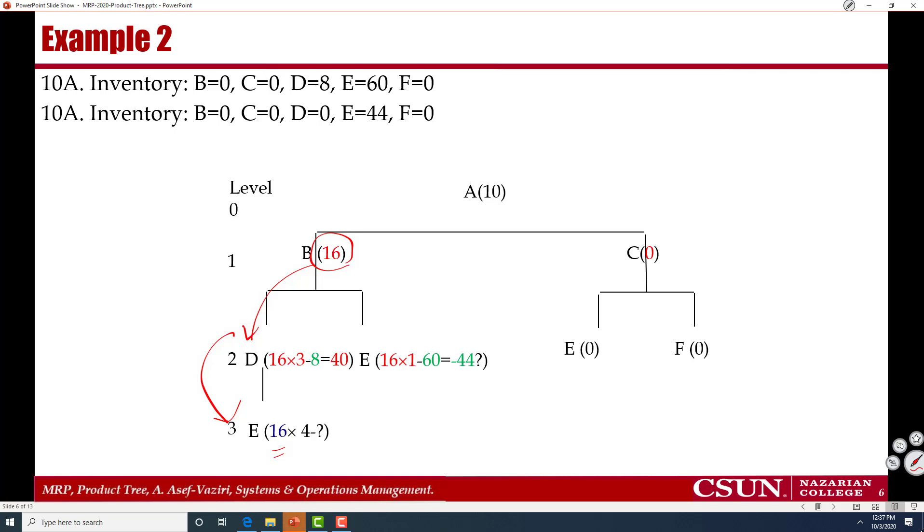It should go to D first. Should I put 16 times 3, which is 48 here? No. Because out of that 48 I have some inventory over there. And I need only 40. So what I should do. I should bring this 40 and put it here.